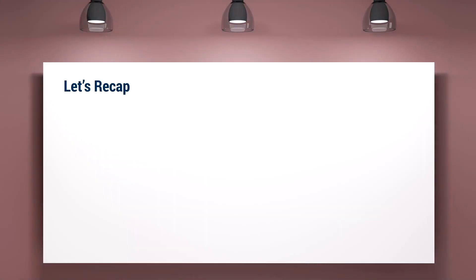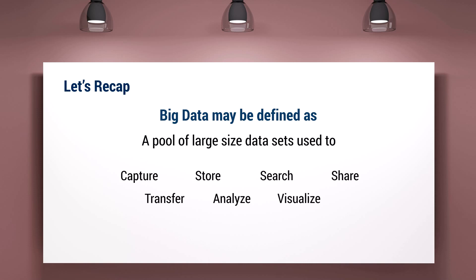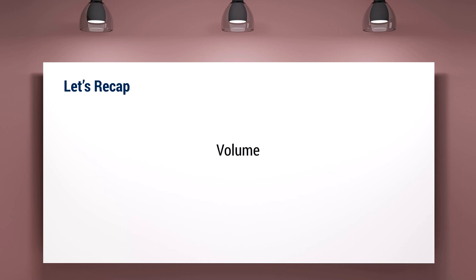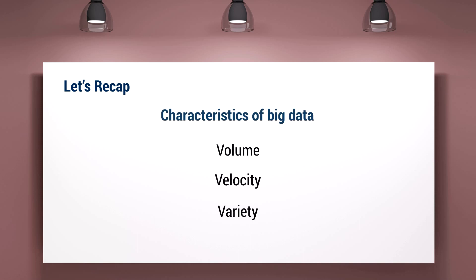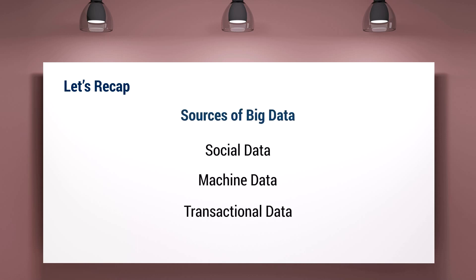Let's do a quick recap of what you've learned in this session. Big Data may be defined as a pool of large-sized data sets used to capture, store, search, share, transfer, analyze, and visualize related information or data within an acceptable elapsed time. This data is not only voluminous, but is also being generated at high speeds, and is varied. Volume, velocity, and variety of data are the characteristics of Big Data. Social, machine, and transactional data are the various sources of Big Data.